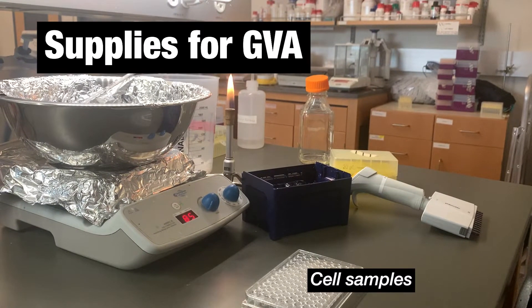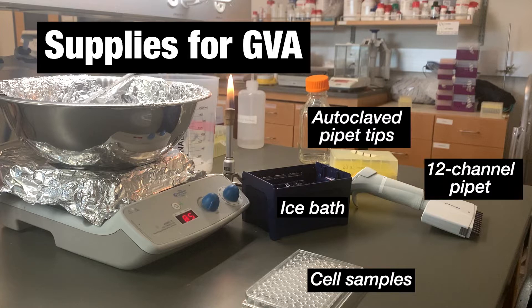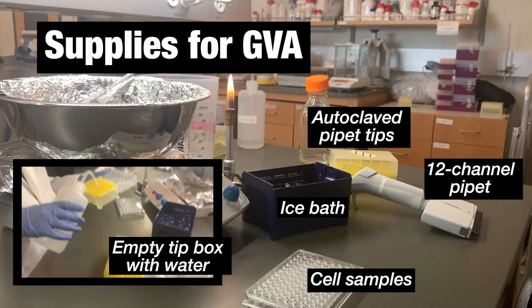Along with cells for each condition, you will need a box of autoclaved pipette tips, a small ice bath, a 12 channel pipette, and an empty tip box with a small amount of water.